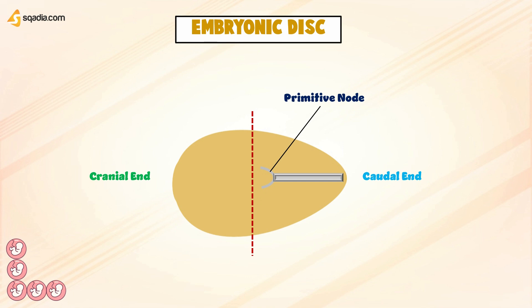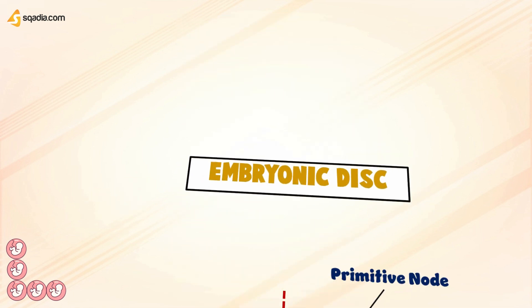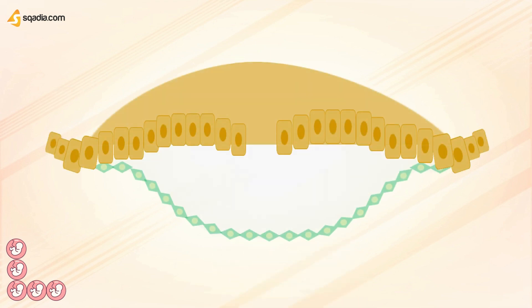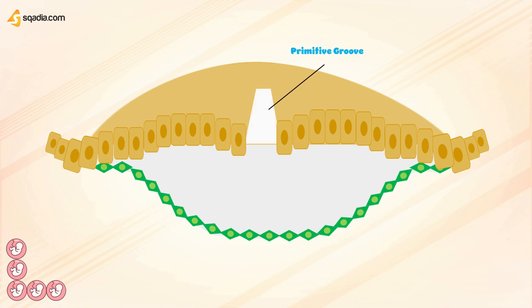Now if we cut and look into it in this way, we are going to focus inside this part of the embryonic disc. These are epiblast cells. These are hypoblast. This is the primitive groove. This is the primitive node. Now pay attention — you are going to see magic.